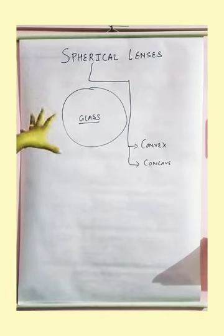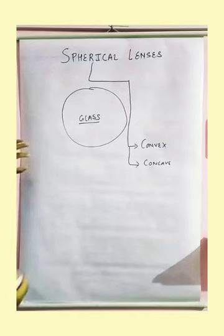This is clear to you that what is glass? Glass means what is the spherical lenses. Spherical lenses is nothing but a glass or a spherical glass through which we are going to make a lens.